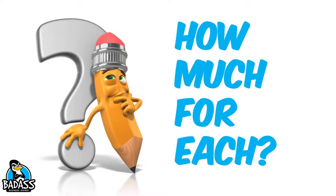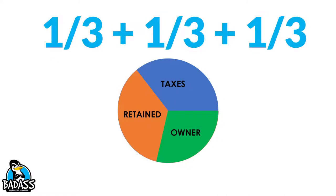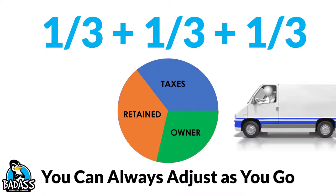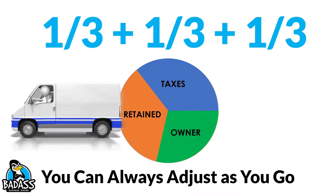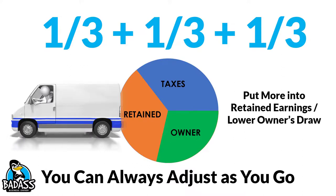Some people are wondering how much should I take out for each one — what should I put into each of those three areas? There's a simple way to start: I like to think of the third, third, third — basically you're putting a third into your taxes, a third into the retained earnings of the company, and a third as your owner's draw. Starting off this way gives you a really good understanding of where you're at and you can always adjust as needed. For example, if you need to buy a van and your retained earnings don't quite have enough money, you're going to put more into retained earnings and lower your owner's draw. Maybe you know you're gonna need it in the next month or two, so you take a little less for yourself, grow that retained earnings, and you're ready to buy the van.